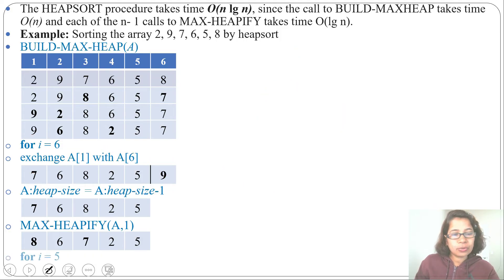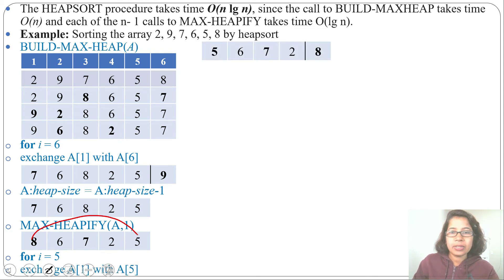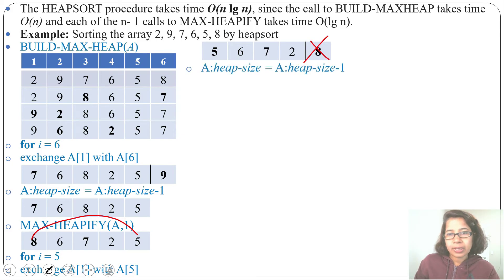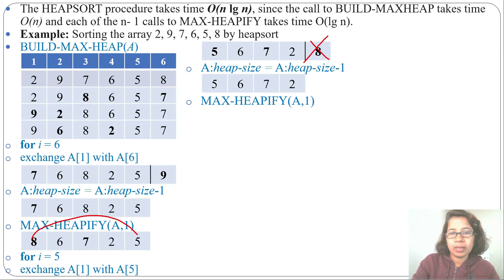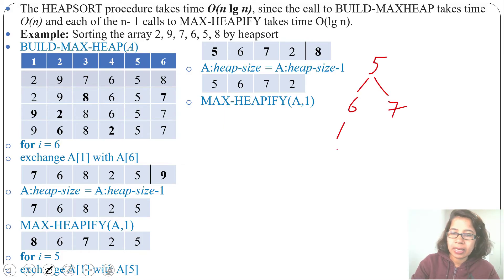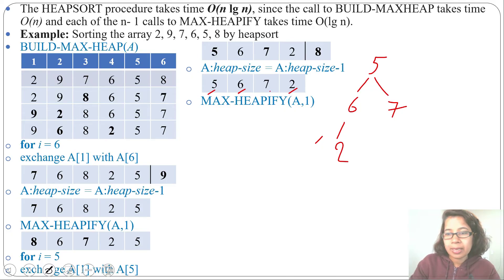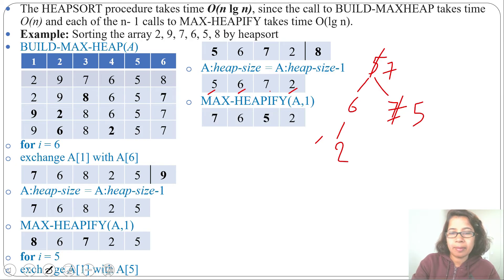For i equals 5, we exchange A[1] with A[5] — these two values are swapped. After the exchange we decrease the heap size and delete the last element. Then we call MaxHeapify on A[1]. Now 5's children are 6 and 7; 7 is the largest, so we swap 5 with 7. After MaxHeapify, 7 becomes the root and 5 moves down. This is now a valid MaxHeap.